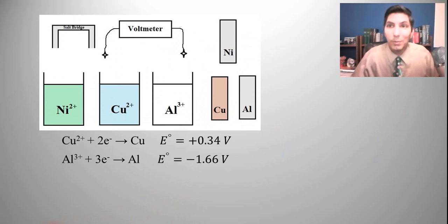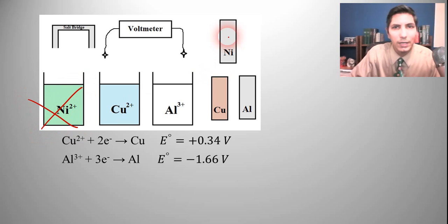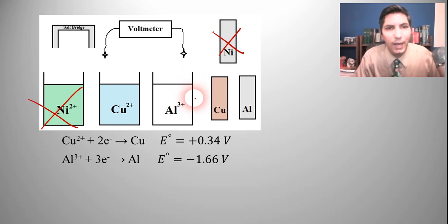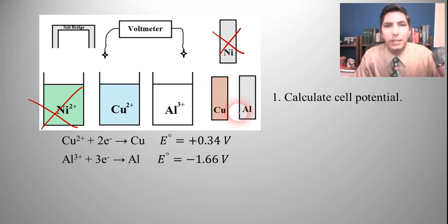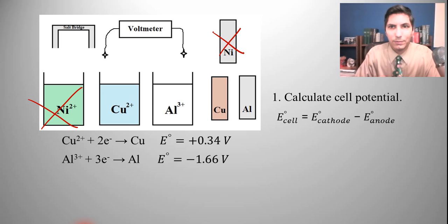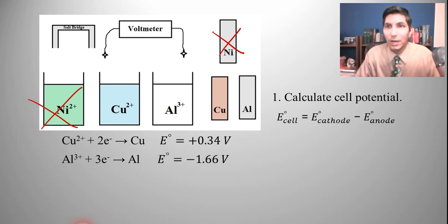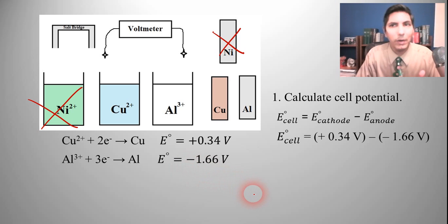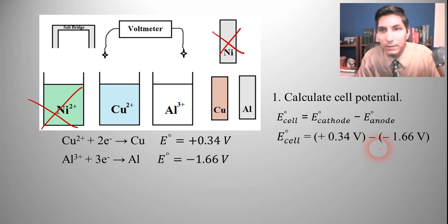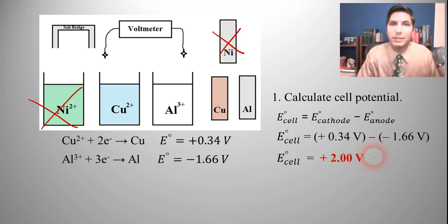We've decided it's going to be copper and aluminum, so we won't use the nickel pieces. Let's calculate the cell potential. E cell equals cathode minus anode. E cell needs to be positive, so we take 0.34 minus (−1.66). That's the only way to get a positive number. Doing the arithmetic, the E cell is 2.00 volts — a 2-volt galvanic cell, assuming standard conditions.